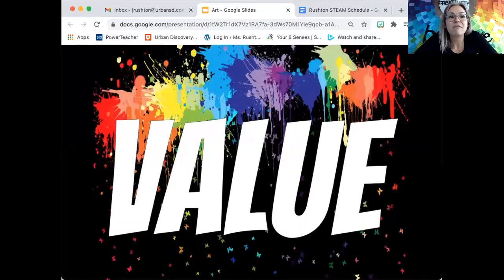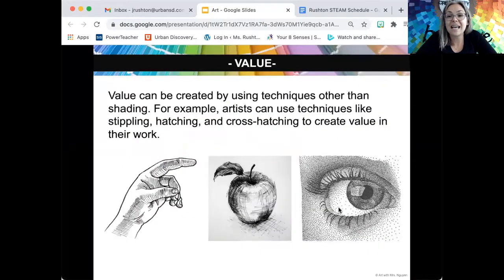This week we're talking about value. Value, remember, is the lightness or darkness of a color. But what happens when you want to show value and you're using a pen or a marker? You have to use a different technique. Here are three techniques that you can use, and we're actually going to use a fourth.